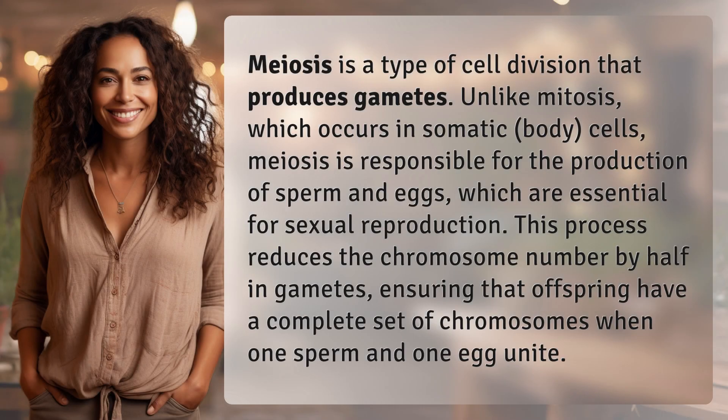Meiosis is a type of cell division that produces gametes. Unlike mitosis, which occurs in somatic body cells, meiosis is responsible for the production of sperm and eggs, which are essential for sexual reproduction.